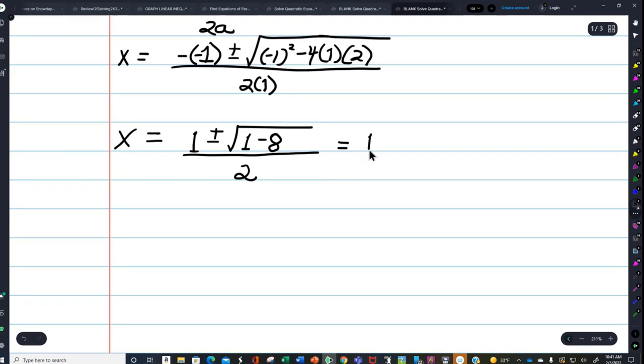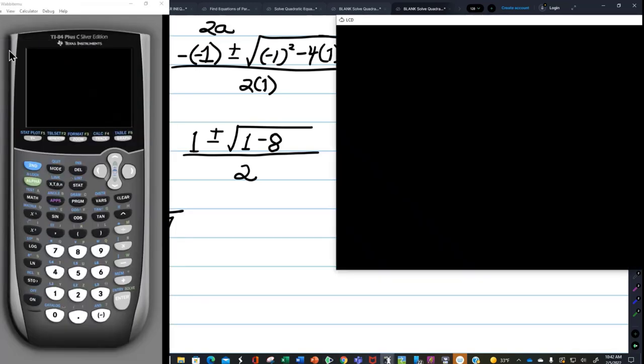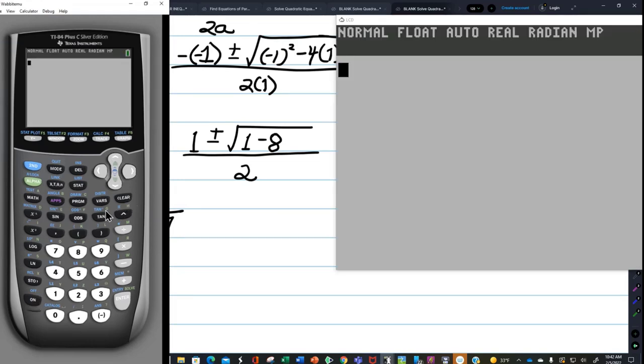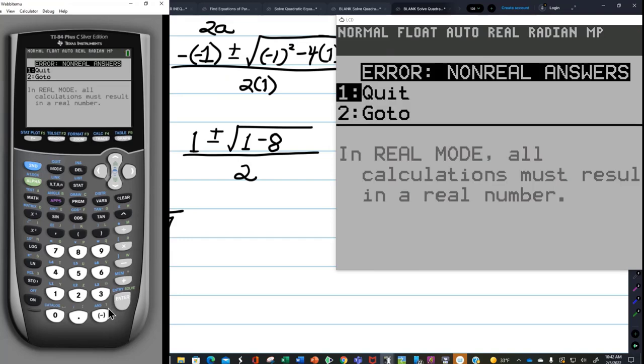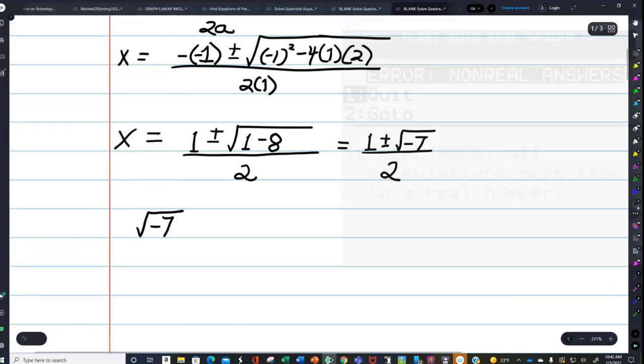x equals negative of negative 1 is positive 1 plus or minus the square root of negative 1 times negative 1 is positive 1 minus 4 times 1 times 2, that's minus 8, over 2. And that equals 1 plus or minus the square root of negative 7 over 2. Now we have to talk briefly about the square root of negative 7. It is very clear, if you put this in your calculator, the square root of negative 7, error, non-real answer. That does not exist in our number system, the real number system. It exists in the complex number system.